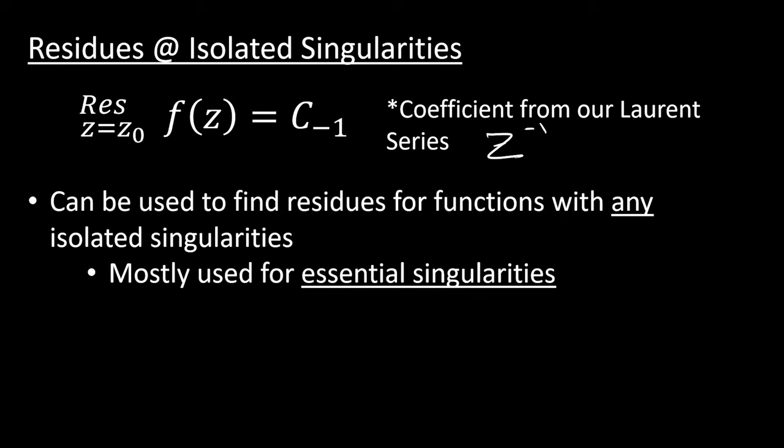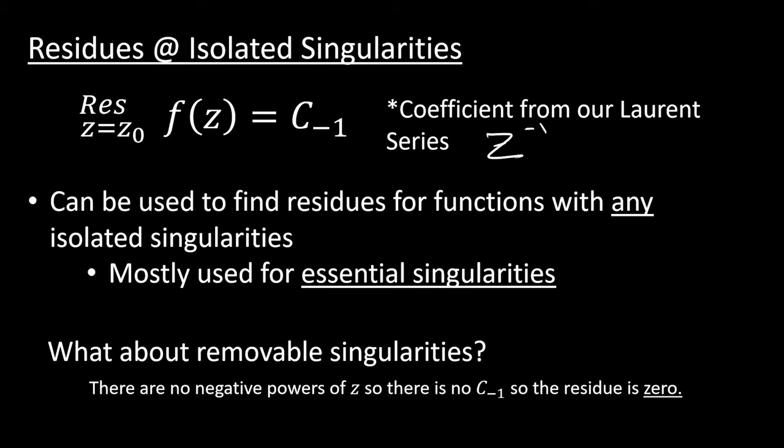Now, this method of expanding our function in a Laurent series and looking for the z to the minus 1 term can be used to find the residue of a singularity for a function with any isolated singularities. But this is most commonly used for essential singularities. What about removable singularities, though, you might be asking? A function with a removable singularity, once we expand it in its Laurent series, removes the singularity so we only have positive powers of z. There are no negative powers of z in this, so there's no negative 1 coefficient, so the residue of this has to be 0.